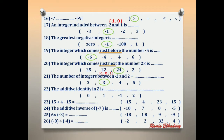Number 22: the additive identity in Z is 0. Number 23: 15 + 4 − 15 equals what? Cancel 15 and negative 15 — they are additive inverses. 0 plus 4 equals 4.